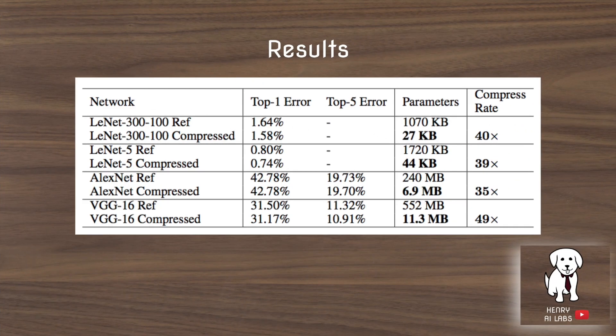These are the results across different networks that they compress using the three-stage pipeline of pruning, quantization, and Huffman encoding. They're all pretty amazing compression rates, especially when you look at the number of parameters and the size of the file.